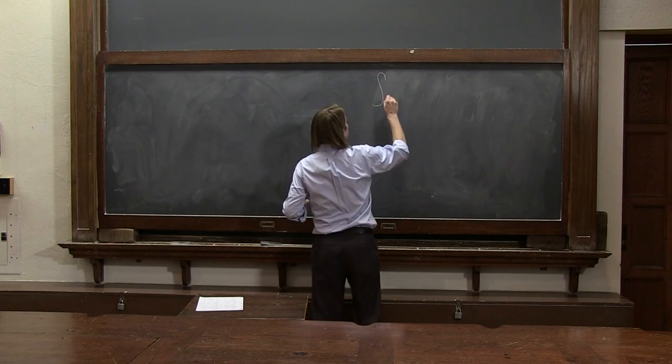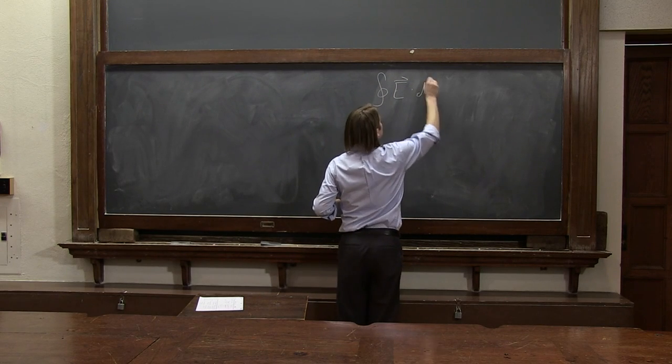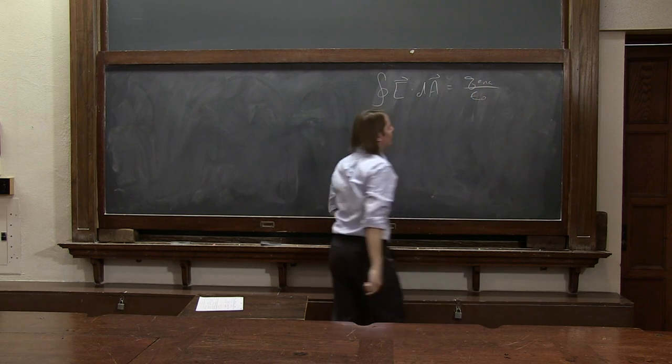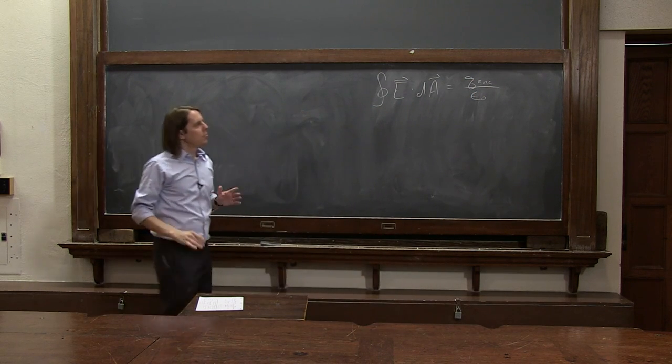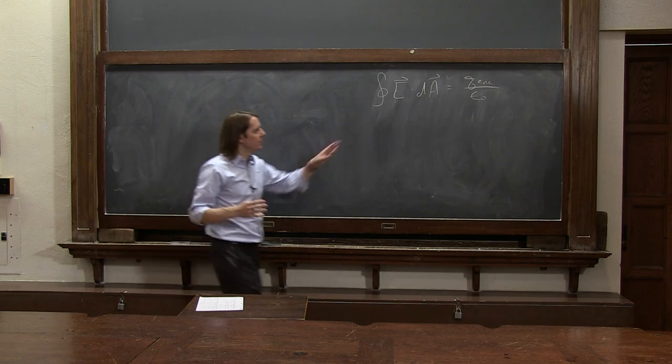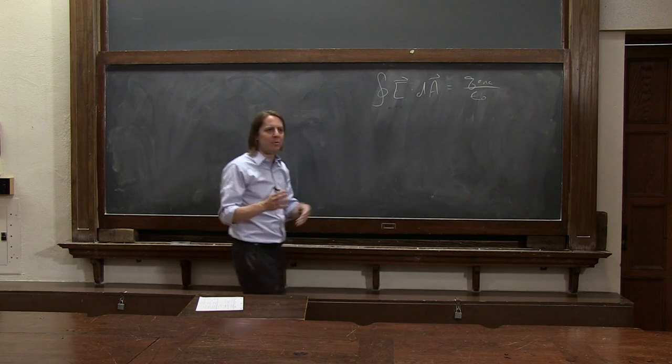Gauss's law: integral around a closed surface of E dot dA equals Q enclosed over epsilon naught. Now you know it. We've played with it, thought about fluxes on this side, thought about the charge enclosed, and written homework problems relating the two.